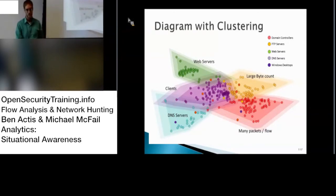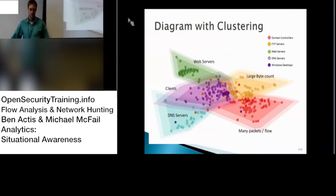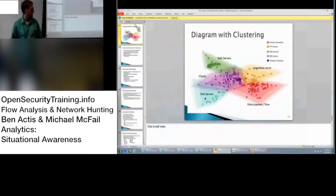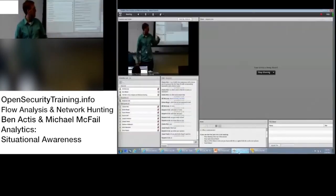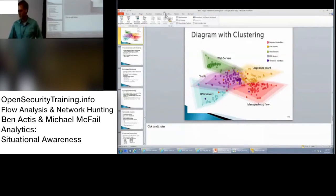If you want to talk about this in a compliance sense — which is where the budget's going to come from — you can frame this as state compliance or service isolation. It's supposed to be a dedicated box, not the everything box. That's where this type of analysis draws that out. Compliance is often where budget comes from, so you can look at this from a state perspective.